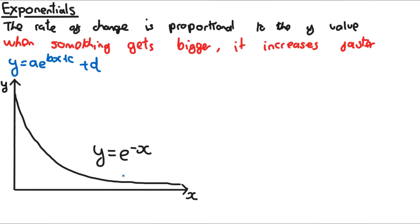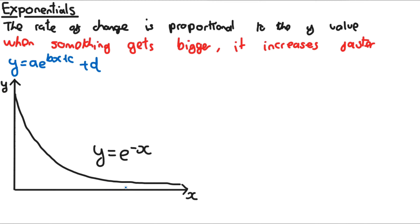For something like radioactive decay, which is also on the spec, we can use exponential modelling with e to the power of minus x, where it starts big and then decreases — the smaller the y-value gets, the less it decreases, until it basically becomes a flat line. There's much more on this in the final video of the chapter, which covers non-linear data and exponential modelling, because exam questions on this also require knowledge of logarithms.